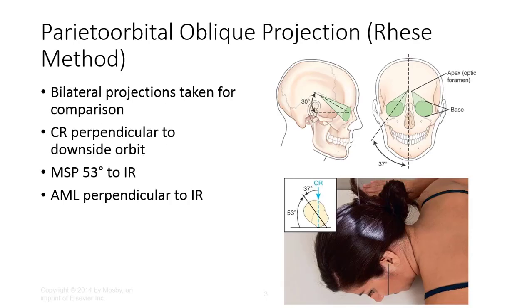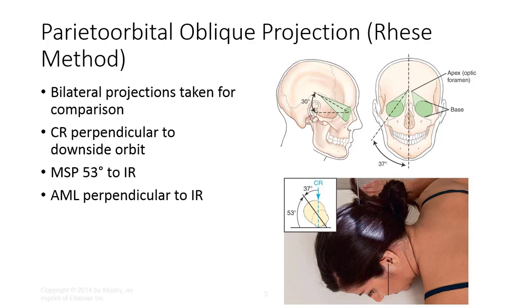For the parietocanthial oblique method, or the Rees method, bilateral projections are usually taken for comparison. Keep the CR perpendicular to the downside orbit and rotate the MSP 53 degrees to the IR from a lateral position. If you're beginning your positioning with the patient in a PA position, you only need to rotate the head 37 degrees from the CR towards the site of interest. Keep the AML perpendicular to the IR. This view should project the optic foramen in the lower outer quadrant.